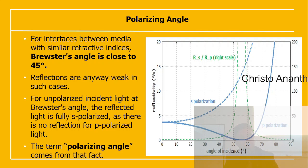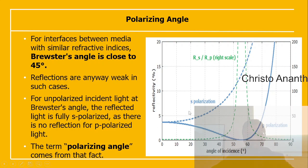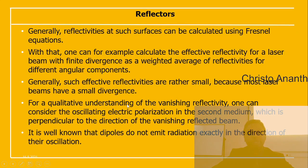For interfaces between media with similar refractive indices, Brewster's angle is close to 45° and reflections are very weak. For unpolarized incident light at Brewster's angle, the reflected light is fully s-polarized, since there is no reflection for p-polarized light — this is the polarizing angle. A plot of reflectivity (%) vs. angle of incidence shows separate curves for s-polarization (Rₛ) and p-polarization (Rₚ).